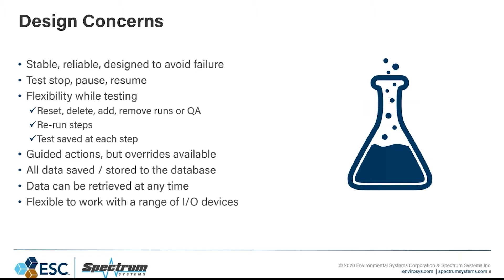Some design concerns we tried to stick to when building this software: the number one rule was to make sure it was stable, reliable, and designed to avoid failure. The last thing you need is to get out to a remote site where you don't have internet or cell phone reception, the plant has made special accommodations for the RATA test, and your software is crashed or not working. It needs to work every time and be reliable for you.